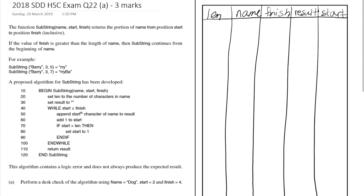Len is the number of characters in name. The value provided for name is 'dog', which has three characters, so len is set to 3. Result is then set to an empty string. Our initial values are: result = "", start = 2, finish = 4, name = 'dog'.